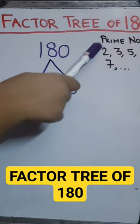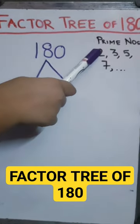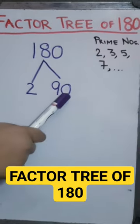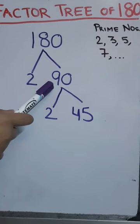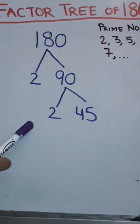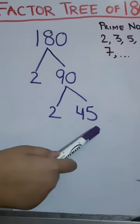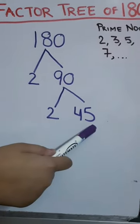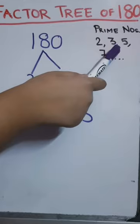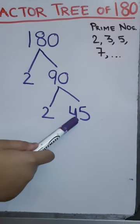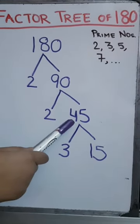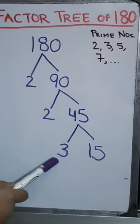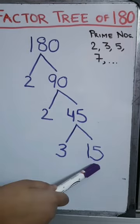Again, 2 is the smallest prime number that divides 90, and 90 divided by 2 is 45. 3 is the smallest prime number that divides 45, and 45 divided by 3 is 15.